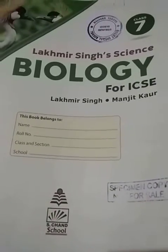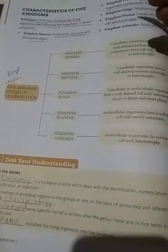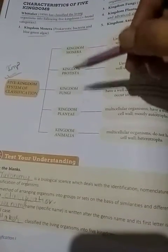Hello students, today we are going to revise Class 7 Biology, Chapter 2 - Kingdom Classification 1. We are going to revise the characteristics of the 5 kingdoms. The living kingdom system has been divided into 5 kingdoms, and kingdom is the highest degree of division or classification. The 5 kingdoms are: Kingdom Monera, Protista, Fungi, Plantae, and Kingdom Animalia. This 5-kingdom classification was given by Whittaker and was made in the year 1959.